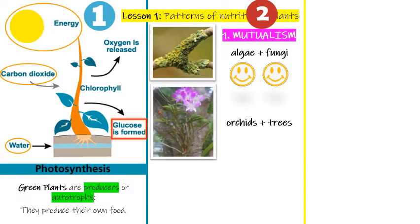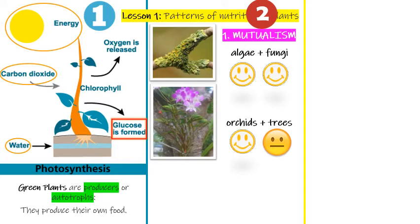What about orchids and trees? Orchids use the trees as a habitat, a house, a shelter. They profit from the environment provided by the trees, so orchids are happy. But in this case, trees do not care if the orchids were here or not — they get nothing from this relationship. They are neither helped nor harmed. This is commensalism: when one organism benefits and the second one isn't affected at all.